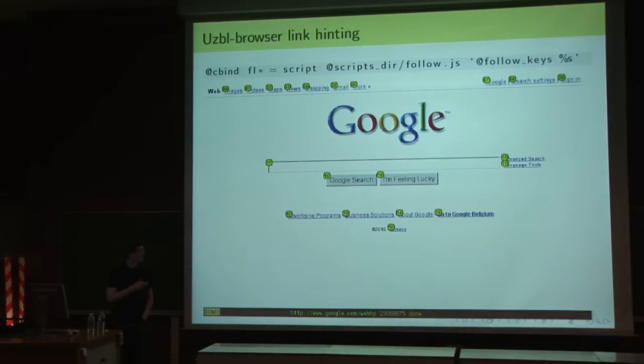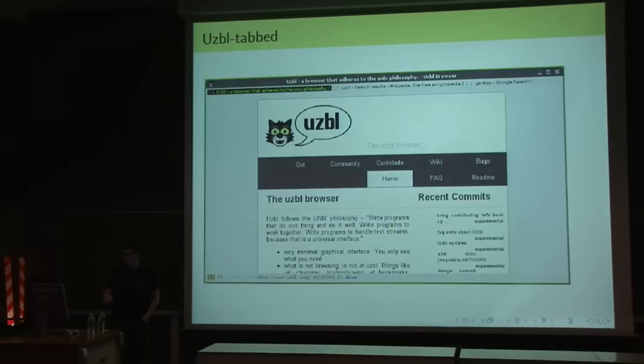This is the link hinting feature. You may have seen this before in Vimperator or Conqueror or browsers like that. What happens, the binding at the top, you first type FL. And then any time you hit an extra key, the binding will be executed again. So you execute the script with its arguments. First, your definition of which keys you prefer to use. So here there are numbers. But depending on your keyboard layout, you may want to use different numbers or different characters. And the binding, it will update itself any time you hit the key so that as soon as you match one, it can automatically load the linked page.